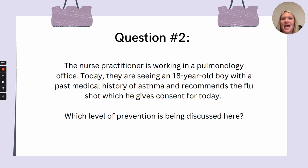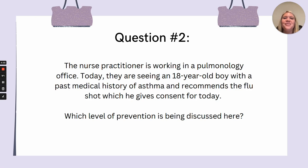Up next, the nurse practitioner is working in a pulmonology office. The NP sees an 18-year-old boy with a past medical history of asthma and recommends the flu vaccine, which he gives consent for today. Which level of prevention is being discussed here? This is going to be primary prevention. We are preventing disease or illness here by administering that flu vaccine, especially in our patients who are more at risk, such as this one. Vaccines are often forgot about in the aspect of primary prevention, but this is definitely something that can prevent our patients from becoming sick.